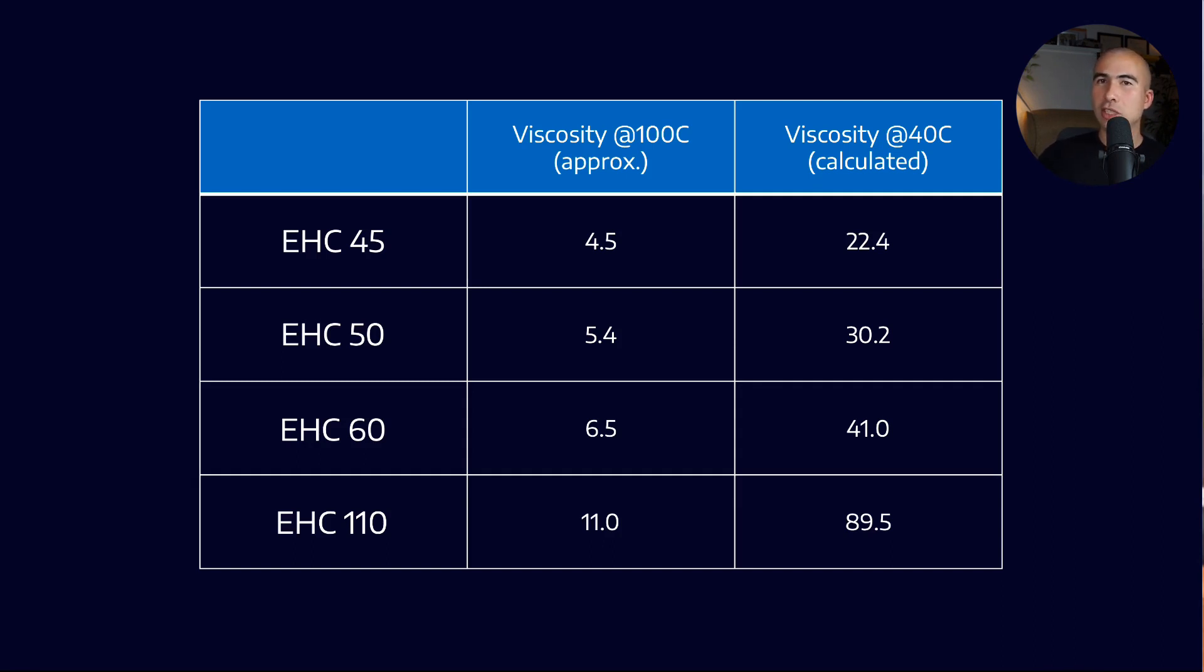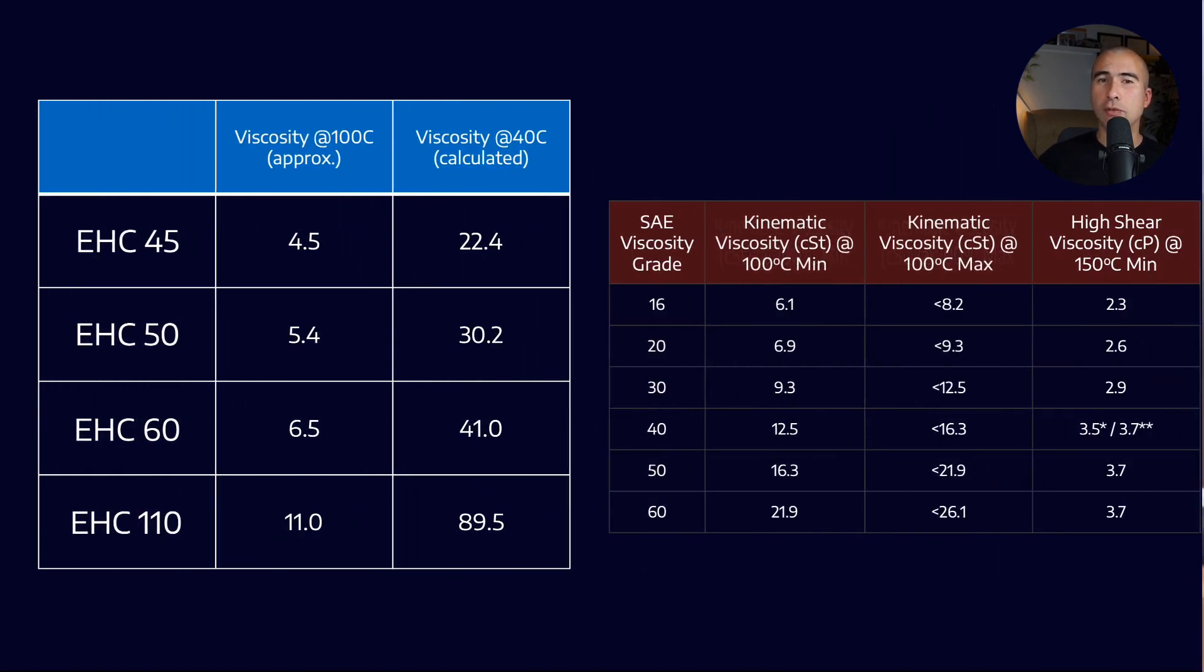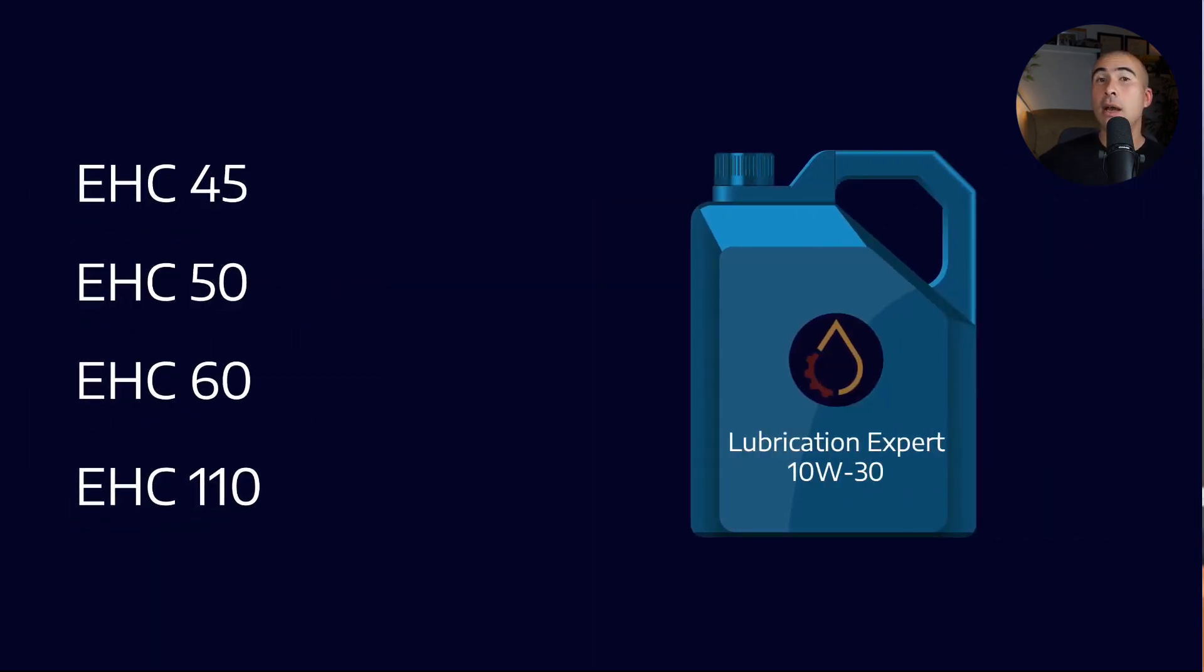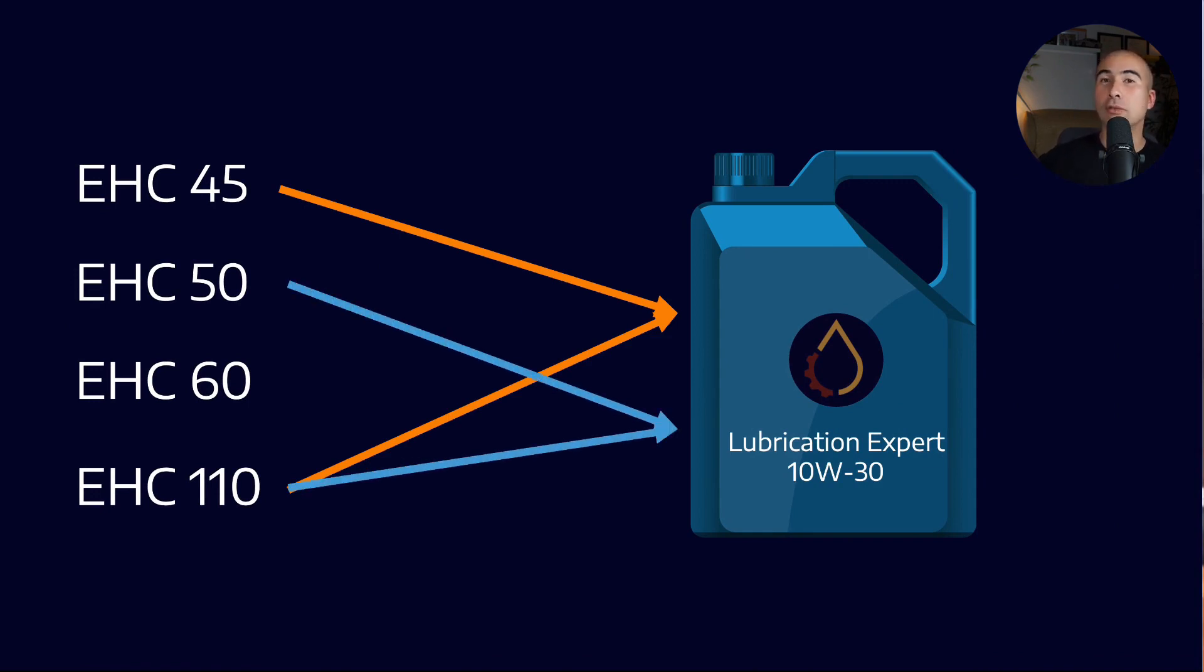So they list the viscosity at 100 degrees Celsius as a range. I've taken roughly the middle of that range and using the listed viscosity indexes, I've shown what that would roughly equal to at 40 degrees Celsius so we can make comparisons for the sake of our ISO viscosity grades. Now specifically for engine oils, if you look at the SAE viscosity grades, so not the W ones but the standard temperature ones, if you want to make a 30, you've got to be between 9.3 and 12.5 centistokes at 100 degrees Celsius. Now that kind of limits our options because you can see that EHC 45, 50 and 60 all sit quite substantially below that. So in order to make a 10W30, I could probably make it with a combination of these base oils. So I could take an EHC 45 and load it up with a bit of 110 or an EHC 50 and load it with a bit of 110 to reach the viscosity that I want.